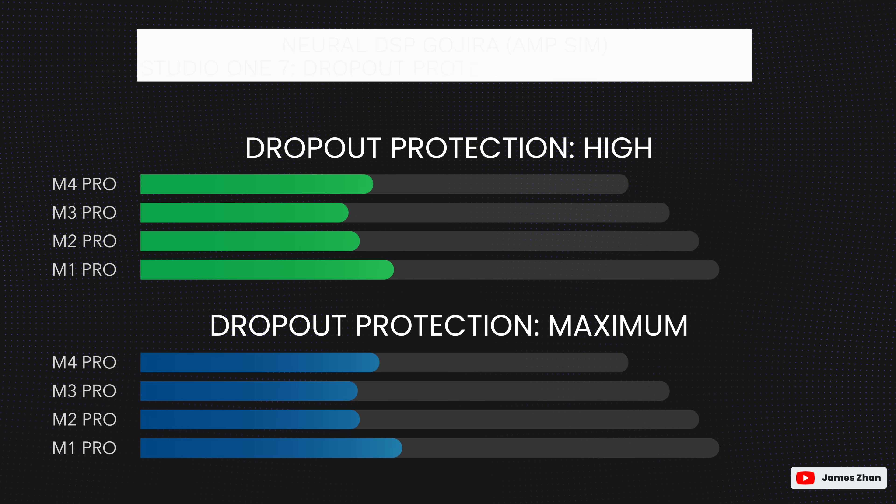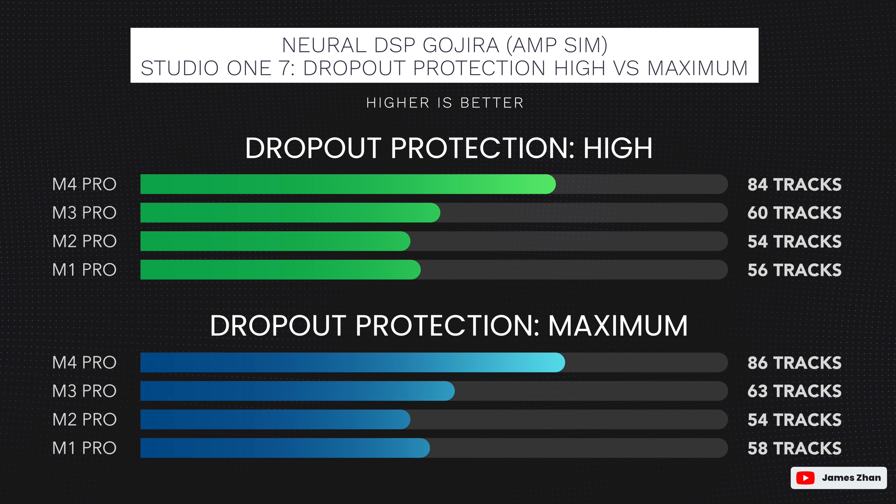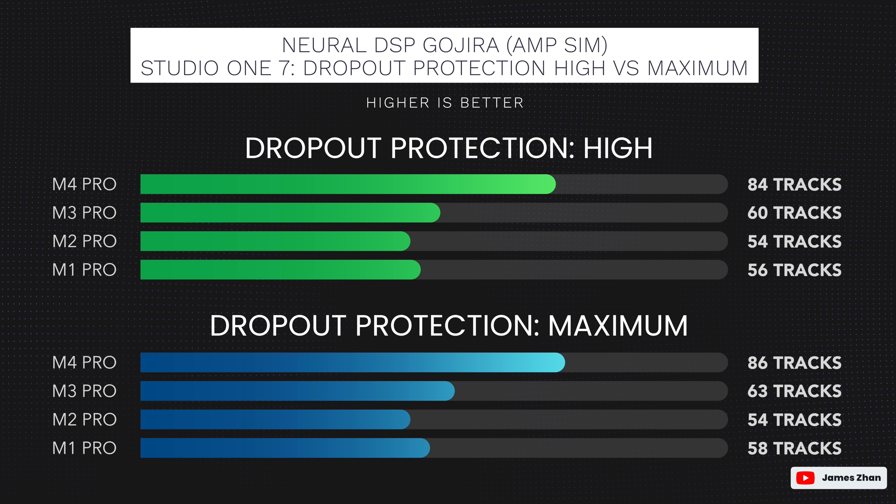Most importantly, it didn't change the fact that the use of efficiency cores affects a DAW's performance on that chip, and therefore you might want to take that into account when buying a Mac. For example, for Studio One, regardless of what the dropout protection was set to, the test results show that a Studio One user on a 10-core M1 Pro Mac will most likely experience very little performance gain if they upgrade to the 12-core M3 Pro, at least according to my test results.